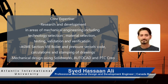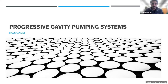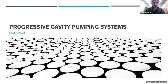People who have been part of my previous presentations would know that we started on a series of different systems used in oil and gas applications for artificially lifting fluid all the way to the surface. We started with ESPs — electrical submersible pumps — in the first lecture, and then we talked about gas lift systems. So in continuation of that journey, we are going to talk about progressive cavity pumping systems in today's presentation.